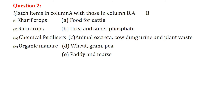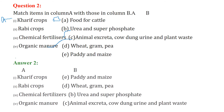Now match the items — Column A and Column B. Kharif crops are paddy and maize. Rabi crops are wheat, gram, and pea. Chemical fertilizers are urea and superphosphate. Organic manure includes animal excreta, cow dung, urine, and plant waste.